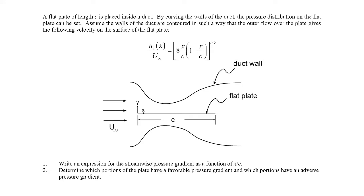In this example we're told we have a flat plate inserted inside a duct. There's a duct with some sort of converging and diverging section, and the walls of the duct are contoured such that the outer flow over the plates has a velocity profile given. So u-infinity is the velocity coming into the duct far upstream, and u_e is the velocity in the outer flow. We're given that u_e is a function of x measured from the leading edge of the plate.